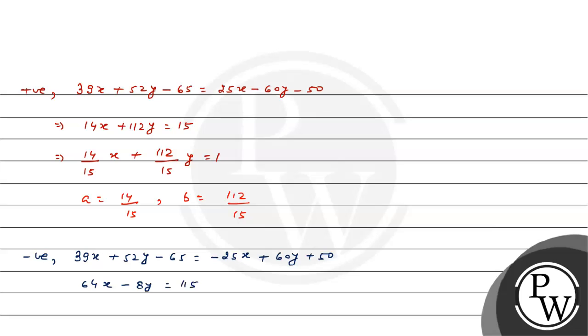Therefore comparing with a and b, a equal 64 by 115 and b equal minus 8 by 115.